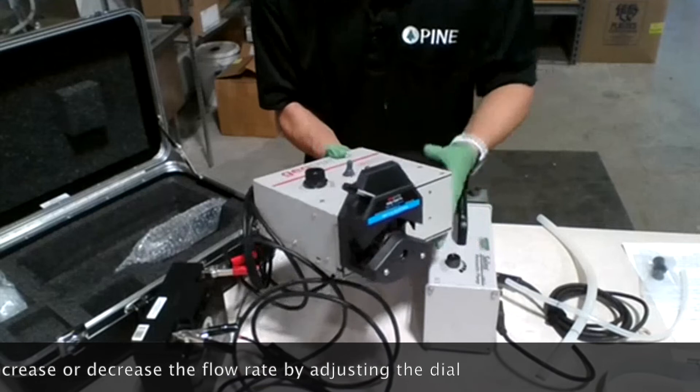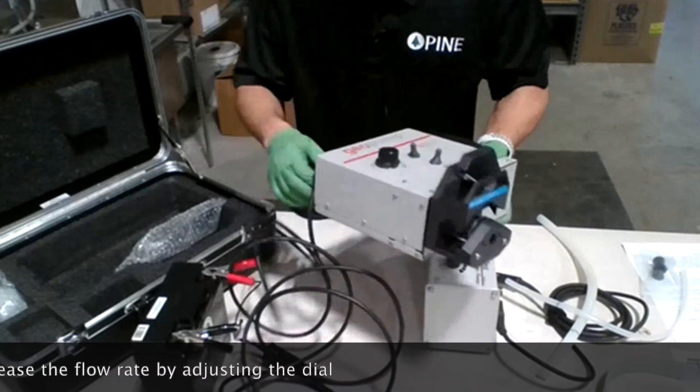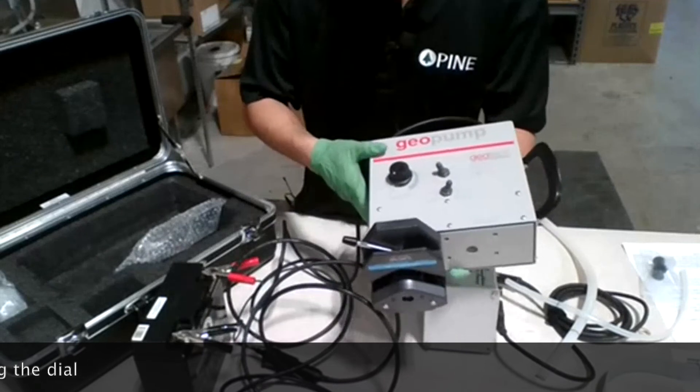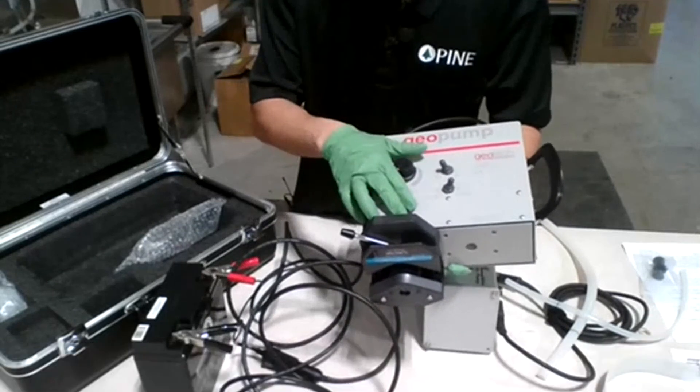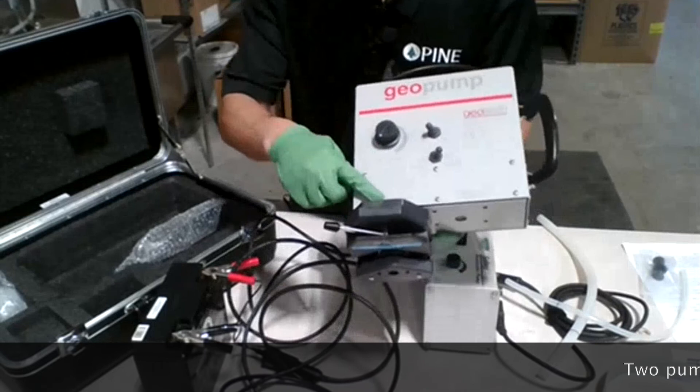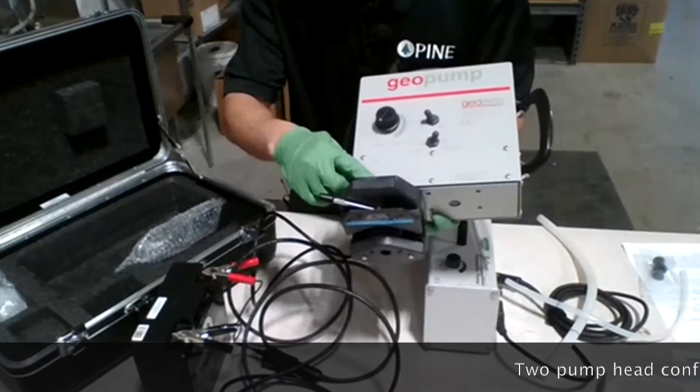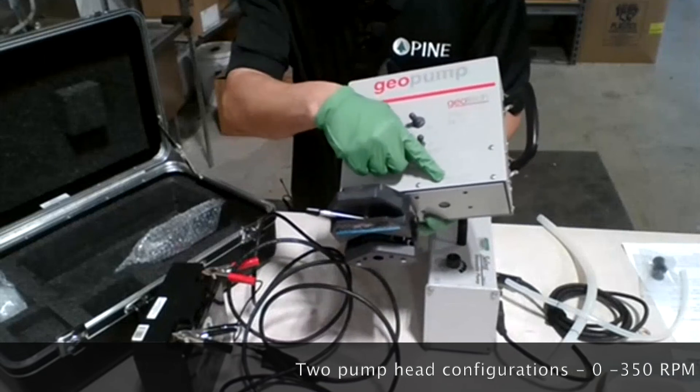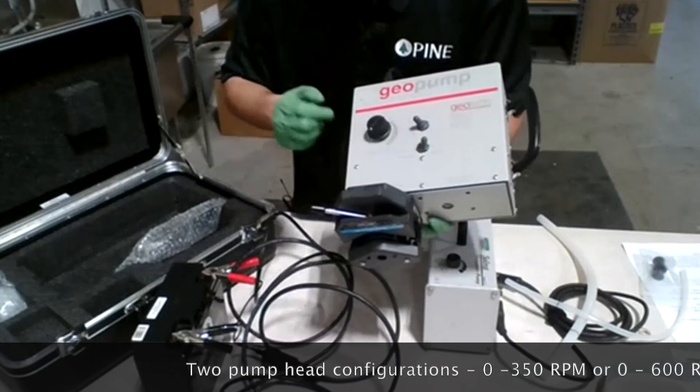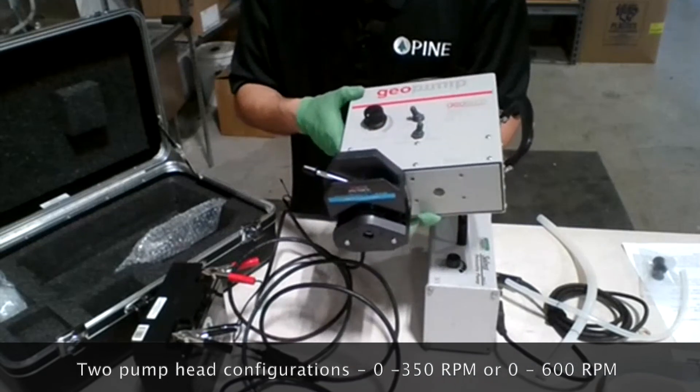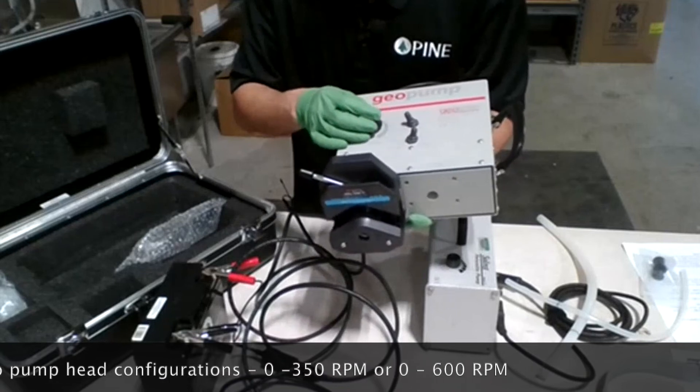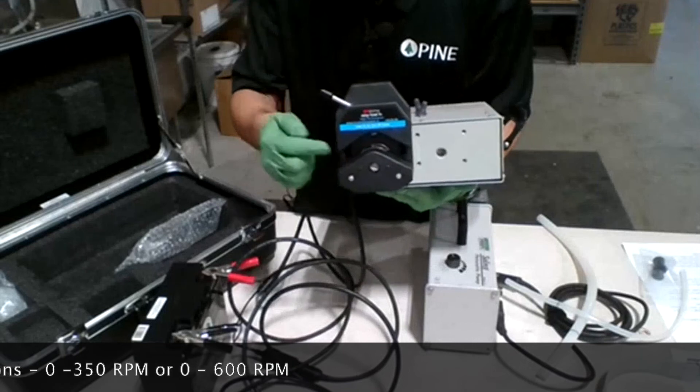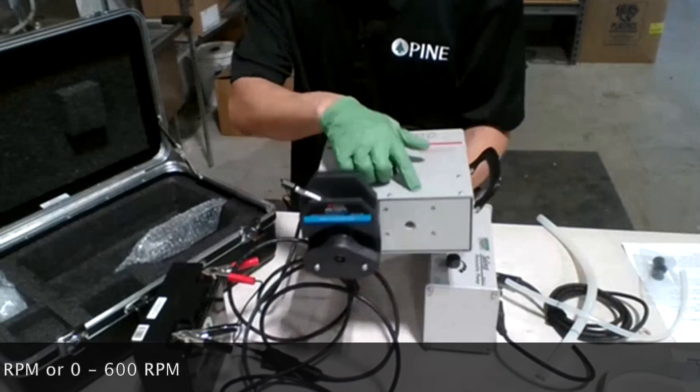I don't know if you can see from a distance here, but the pump has two pumping stations. This one that the head is attached to is zero to 350 RPM. The other one is zero to 600 RPM. If you want to swap stations from station one to the second one, you can simply do so by removing those two screws and switching it to the other side for higher RPM.